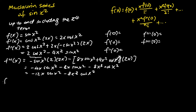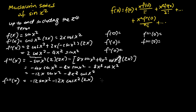Next we find f''''(x) by differentiating f'''(x) one more time. For the first term we apply the product rule: differentiating negative 12x gives negative 12 times sine x squared, then differentiating sine x squared gives cosine x squared times 2x. For the second term, differentiating 8x cubed gives 24x squared times cosine x squared, and differentiating cosine x squared gives negative sine x squared times 2x.